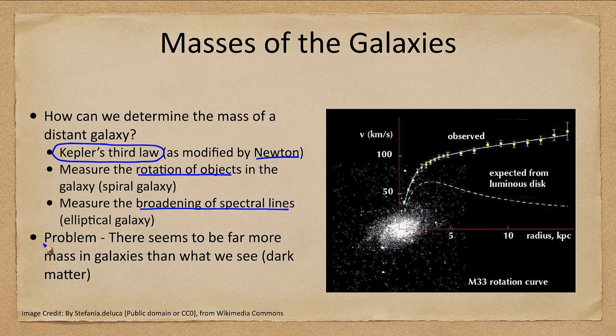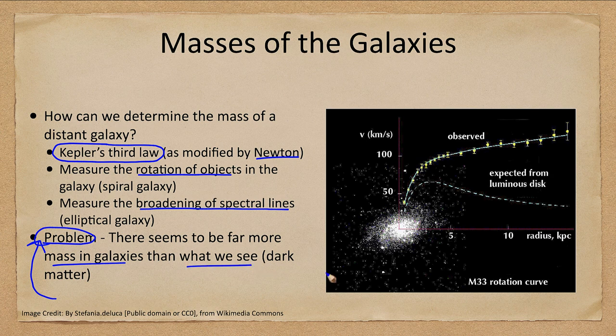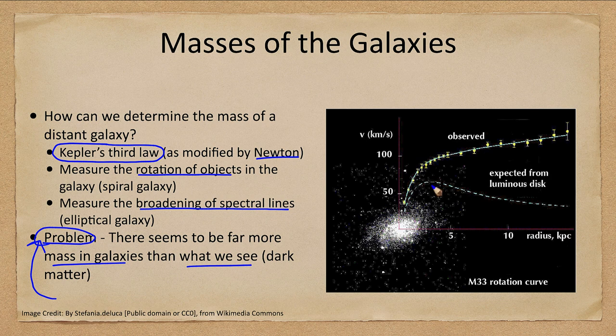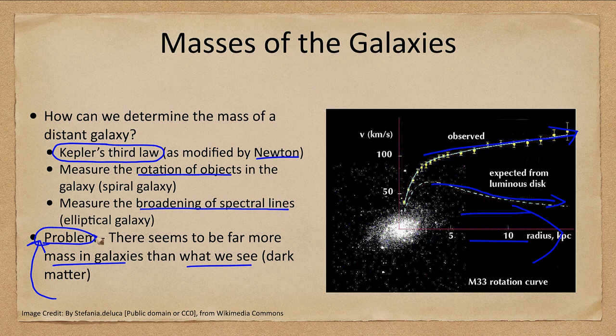When we measure these masses we have a problem. There is far more mass in the galaxies than what we can see, and we've talked about dark matter before. We expect based on what we see the curve to follow the lower line, but it follows the upper line and increases, meaning there has to be a lot more mass out beyond the edge of the galaxy. There has to be a lot more mass all around it.